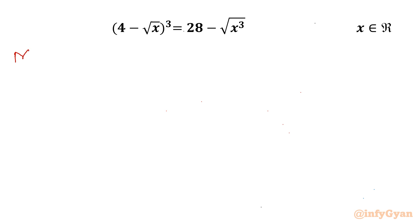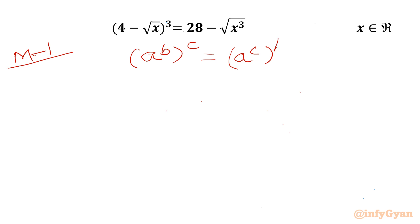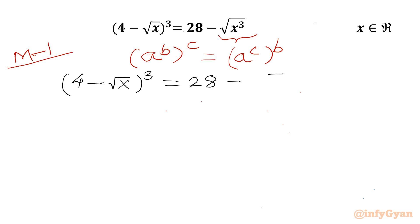Let me write here Method Number One. I will begin with the standard exponential property: (a^b)^c = (a^c)^b, which I will apply here. So I will be writing our equation as (4 minus √x)³ = (28 minus √x)³ — wait, let me rewrite: (4 minus √x)³ equals (28 minus √x)³ after applying that property.